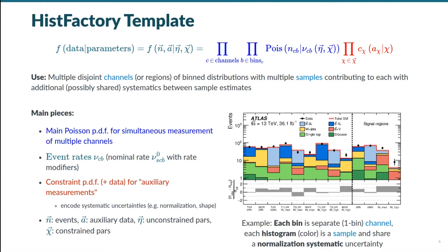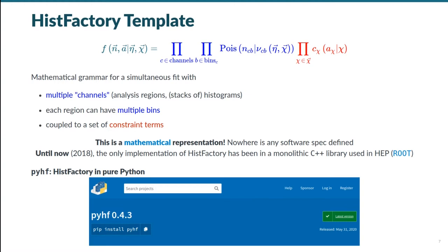The second part in red is comprised of constraint PDFs that allow for different auxiliary measurements to constrain the overall model and encode different systematic uncertainties from the physics theory and the detector responses. In this example plot, the samples could share a systematic uncertainty in the normalization in addition to other modifiers. This gives us a mathematical grammar to set up a simultaneous fit for multiple channels, regions, each with multiple bins and multiple samples, processes that are all coupled to a set of constraints. But the important part is that this is just mathematics.